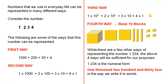The third way is 1 times 10 to the power of 3 plus 2 times 10 to the power of 2 plus 3 times 10 plus 4 times 1. And the fourth way is by using base 10 blocks.